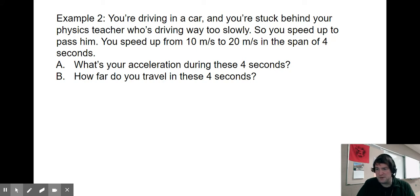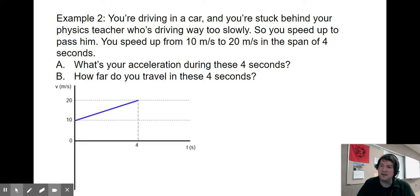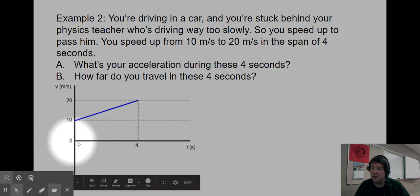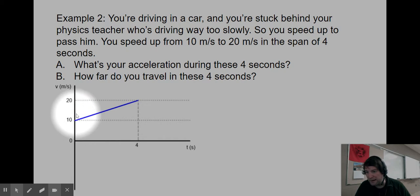The first step always in this problem solving is making a velocity versus time graph. We're not interested in the motion before those four seconds, so we can start our time keeping right at that moment when you begin speeding up. So zero seconds is when you begin speeding up from 10 meters per second. At time zero on this graph, you are at 10 meters per second.